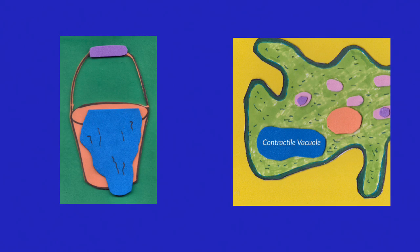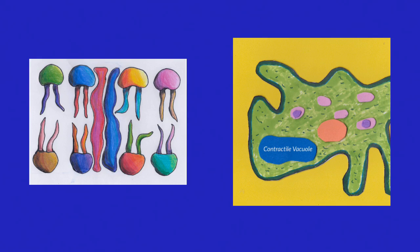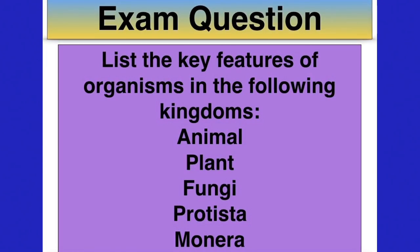The amoeba osmoregulates by using this contractile vacuole. You can imagine it a bit like a bucket. The contractile vacuole fills up with water, fuses with the cell membrane, and expels that excess water. I think this is a question you should try and answer.